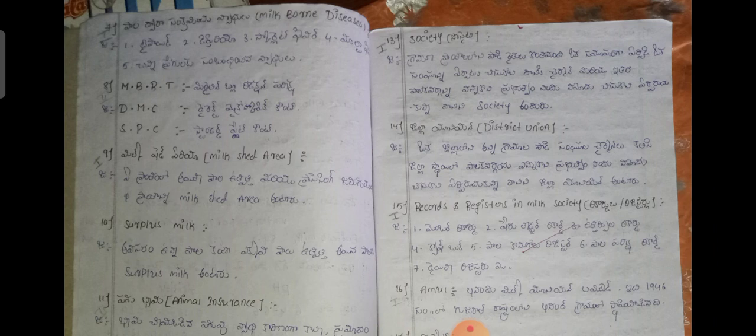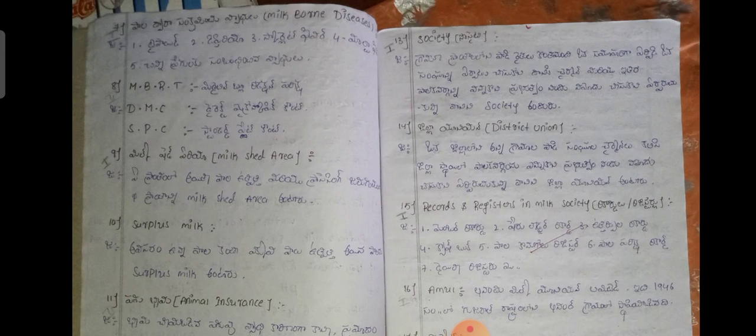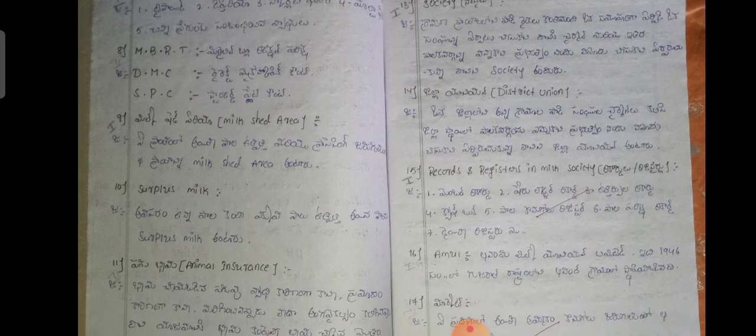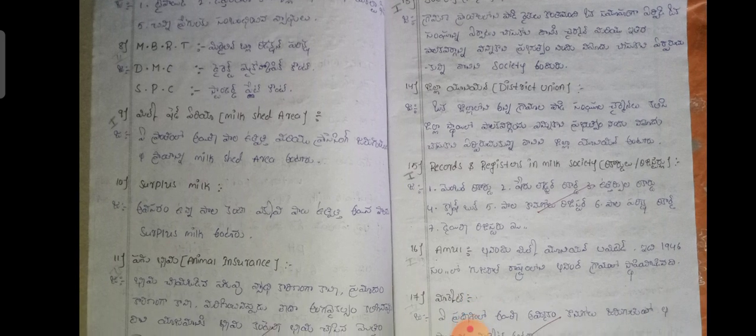Important abbreviations: MBRT stands for Methylene Blue Reduction Test; DMC stands for Direct Microscopic Count; SPAC stands for Standard Plate Count. The milk shed area is important in the context of milk processing.